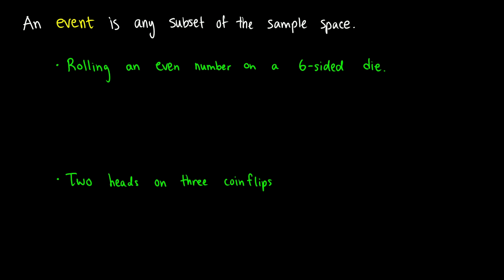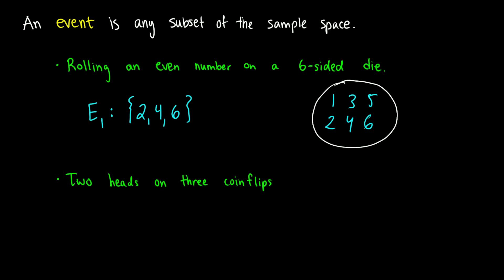Here's an event: rolling an even number on a six-sided die. There are only three possible outcomes — either we roll two, four, or six. Now what does it mean to be a subset of the sample space? If we write out all possible outcomes for our die roll, the sample space S is {1, 2, 3, 4, 5, 6}, and the event of rolling an even is {2, 4, 6}. Therefore all outcomes in the event are contained within the sample space — if you draw this out, you can always put the event into the bigger circle.